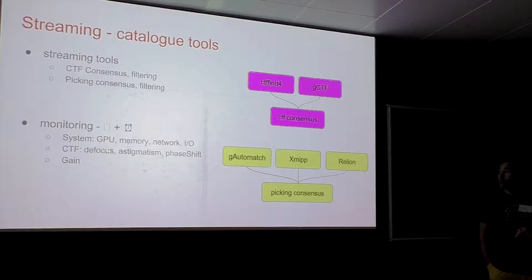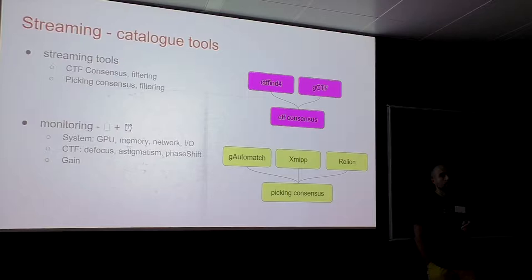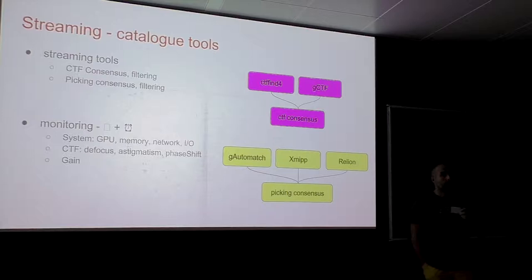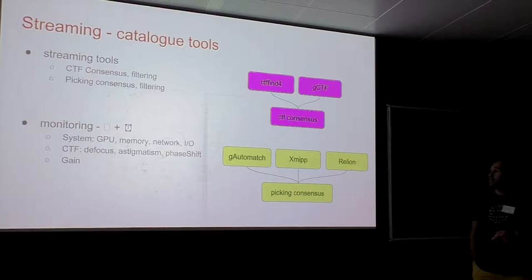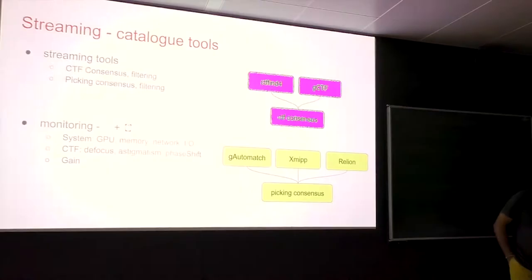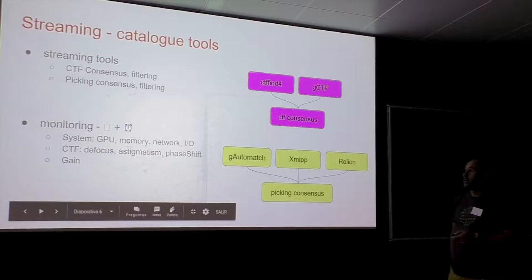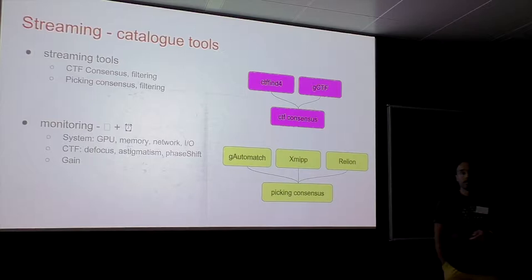You can also monitor the gain — this comes from an XMIPP method that estimates the gain from a micrograph, so you can monitor whether the gain has changed during acquisition, checking every 500 or 1,000 movies. You can also get a report summary of the acquisition as an HTML file — a self-contained folder you can access anywhere on the network. It summarizes basic acquisition information, lists the methods used in the workflow, and includes CTF monitoring charts for resolution and focus coverage.